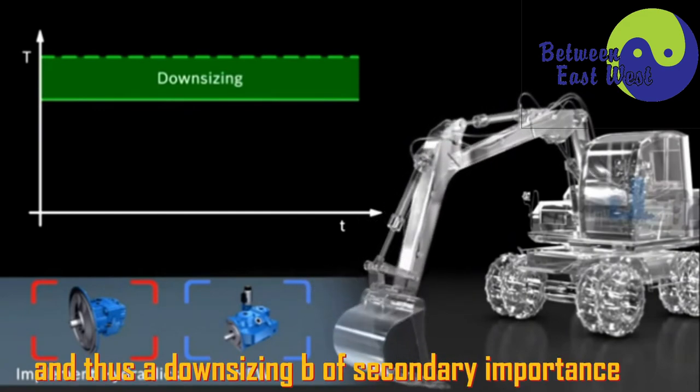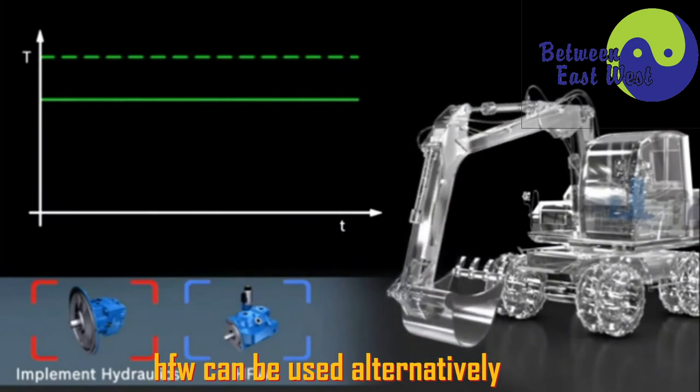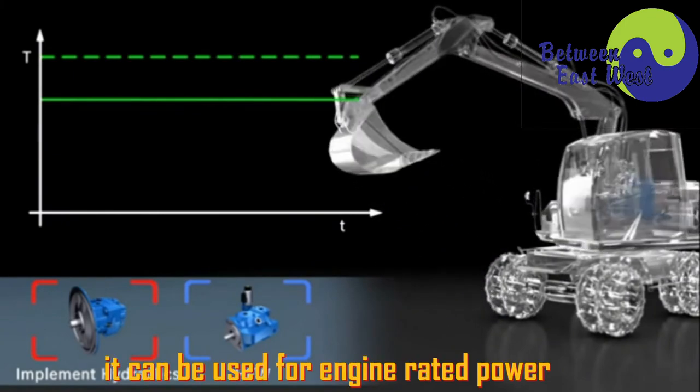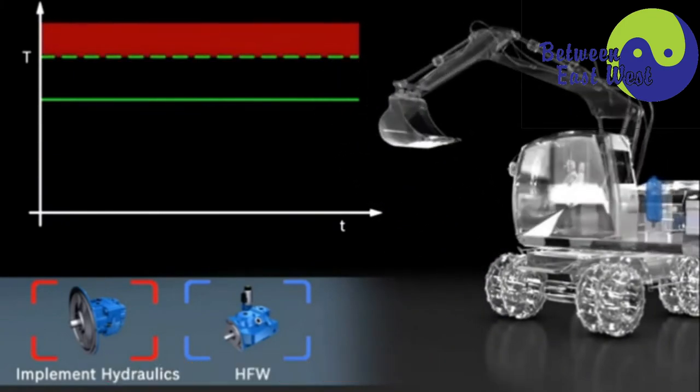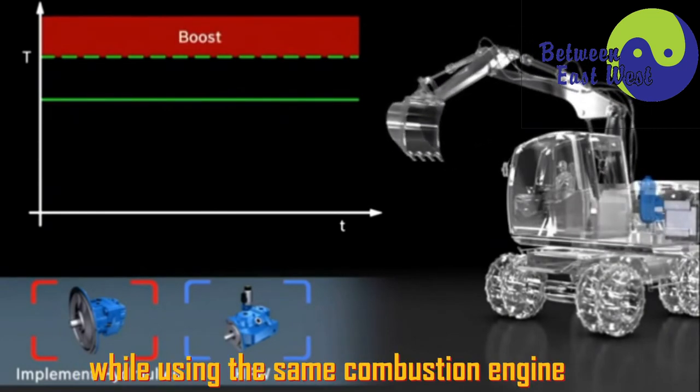Should power smoothing, and thus downsizing, be of secondary importance, HFW can be used alternatively. It can be used for engine rated power. This boost function means more overall power while using the same combustion engine.